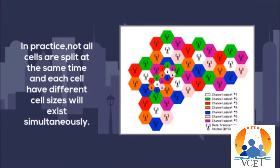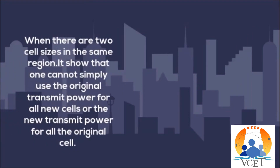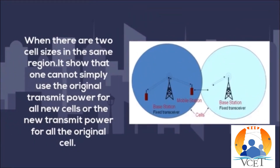The cells are split from a larger cell into a smaller cell. The smaller cell is called a microcell and the larger cell is called a macrocell. The cells are split but not all at the same time and not all the same size. There are two different cell sizes in the same region: the larger cell with the original transmitter power, and the smaller cell with a new, reduced transmitter power.